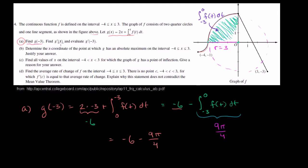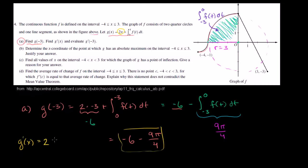Then they say find g prime of x. g'(x) is just the derivative of g(x). The derivative of 2x is just 2. And then by the Fundamental Theorem of Calculus, the derivative of the definite integral from 0 to x of f(t) dt is just f(x). So g'(x) = 2 + f(x).